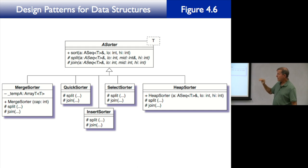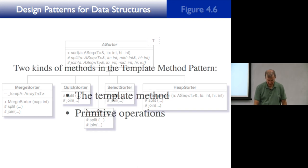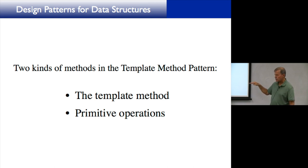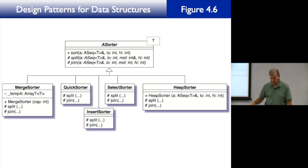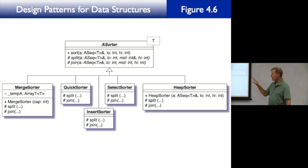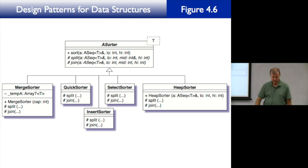The sort is already written in the sorter. Remember, we have two different kinds of operations. There are two kinds of methods in the template method pattern: the template method, which is the same, and the primitive operations, which differ. So here, which one is the template method? It's sort, right? And which ones are the primitives? The split and the join. The sort is actually implemented in the abstract class, whereas the split and the join are each implemented in subclasses, depending on the sort method.